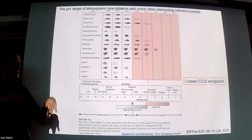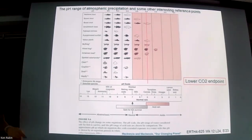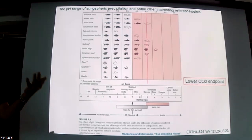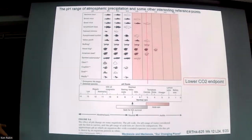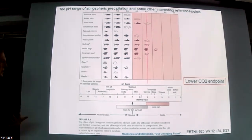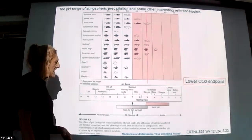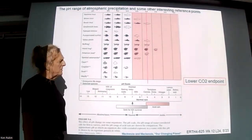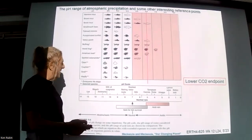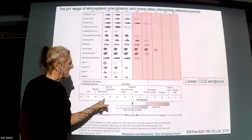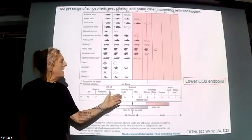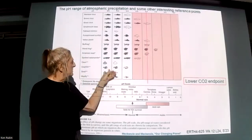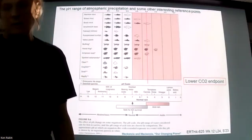Anytime we find environmental pH less than that CO2 endpoint, we know some other acid was added. Those acids can be mineral acids like nitric or sulfuric acid, or organic acids. Today's focus is entirely on mineral acids. These are just some benchmarks showing other things with similar acidities to various points on that pH scale.